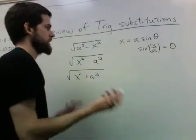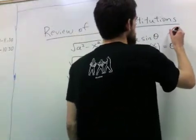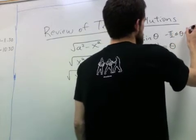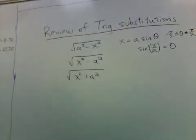And when you do this, you have to specify what range theta is in. For the sine one, we'll always be specifying theta between negative pi over 2 and pi over 2.